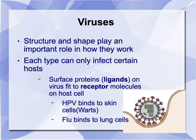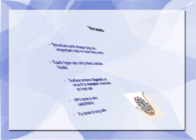The structure and shape play an important role in how they work, and they can only infect certain specific hosts, because they bind to proteins, ligands, that fit specific receptor molecules on the host cell. For example, HPV binds to skin cells, which cause warts, and flu binds to lung cells.